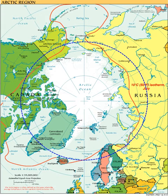The western limit is the Seward Peninsula and the Bering Strait. The southern limit is the Arctic Circle, latitude of 66 degrees 33 minutes, which is the approximate limit of the midnight sun and the polar night.